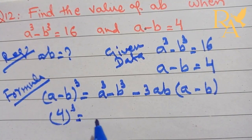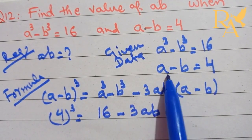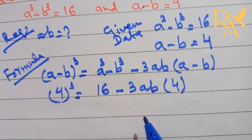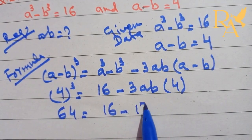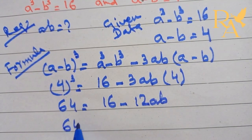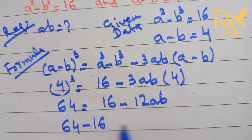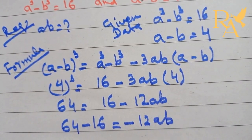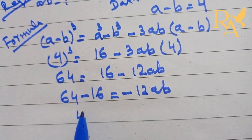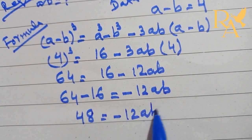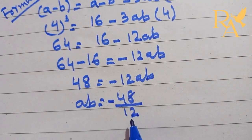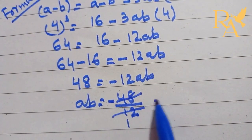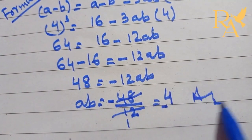So 4 cube equals A cube minus B cube, which is 16, minus 3AB, and A minus B is equal to 4. 4 cubed is 64. A cube minus B cube is 16 minus 12AB. Solving, 64 minus 16 gives 48, so AB is equal to minus 4. This is the answer to the given question.